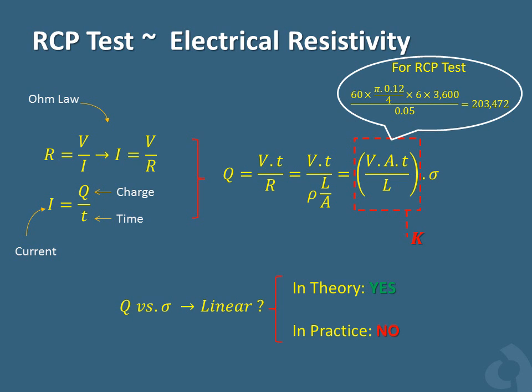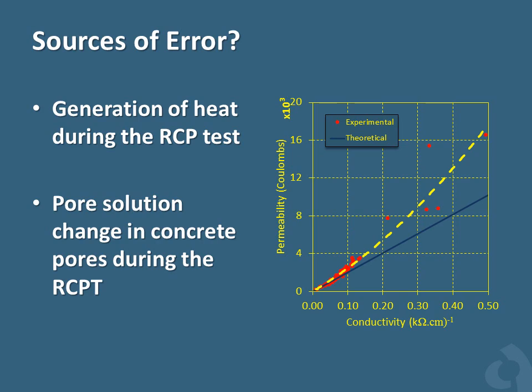In theory, we expect a linear relationship between the RCP test results and the conductivity of concrete. If we combine and simplify the famous Ohm's law and equations relating electrical charge and current, we can derive this linear relationship for the RCP test. However, in practice, a non-linear relationship is observed. This can be explained by the generation of heat during the RCP test, which changes the test conditions and the pore solution properties.